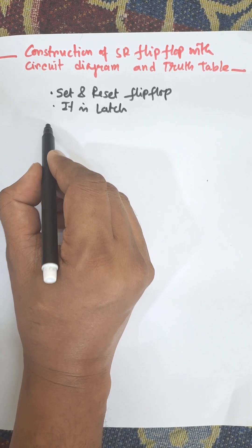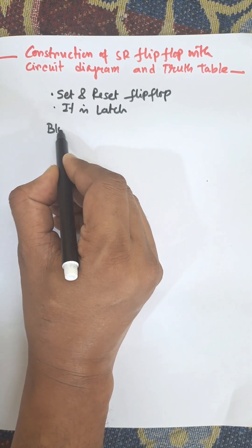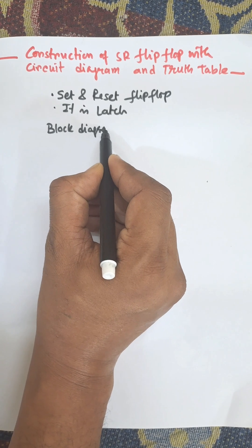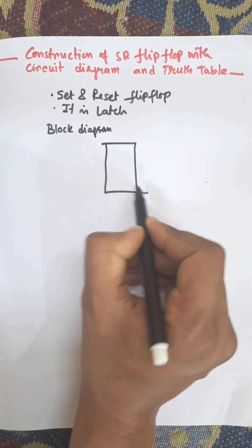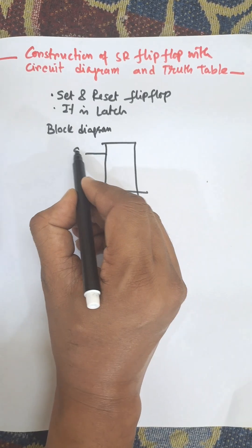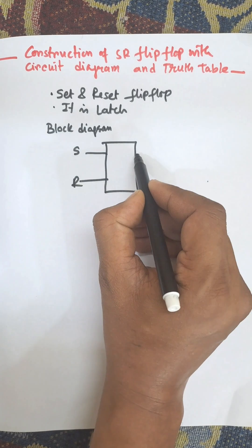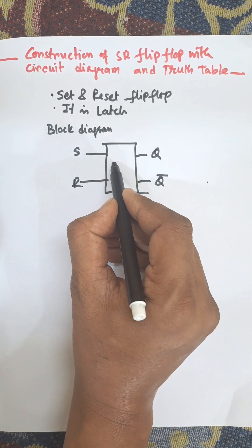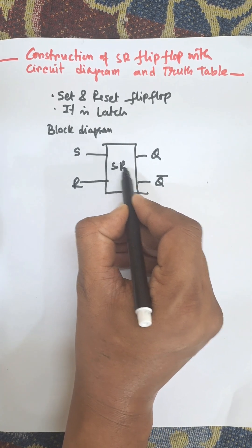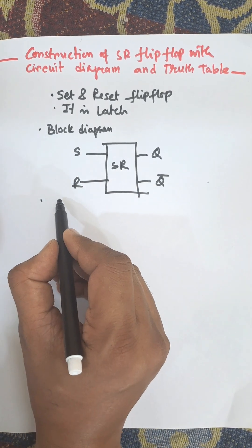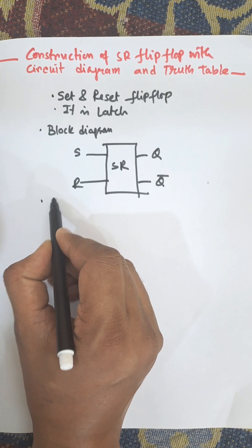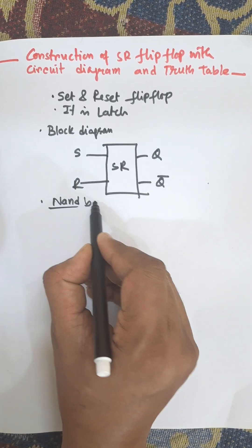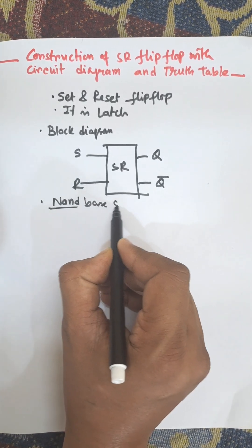The block diagram consists of two inputs: one is S, another is R, and two outputs Q and Q-bar. This is the SR flip-flop block diagram. The circuit diagram can be constructed with the NAND gate — a NAND gate SR flip-flop.